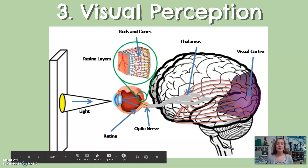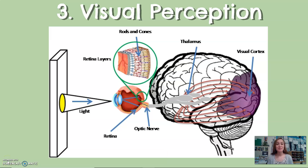Hi everyone. This video will cover part three of sensation and perception — specifically visual perception. In this slide, it's a simple review of how light travels through the eye to the visual cortex, but we're going to focus on what's happening in the visual cortex and how that information is being processed.